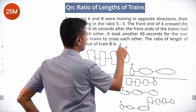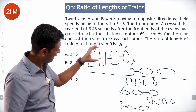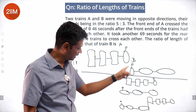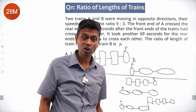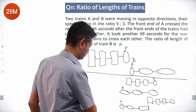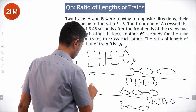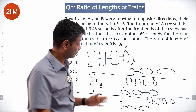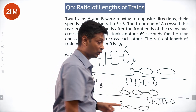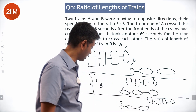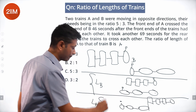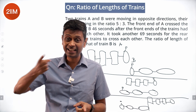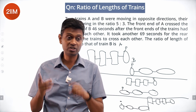Train A crosses and goes beyond. The front end of train A is here, and the front end of train A reaches the rear end of B. The relative distance covered from this phase to this phase is the length of train B. From the front-to-front to front-to-rear, the relative distance covered is length of train A. In the first phase, the relative distance covered is length of train A.